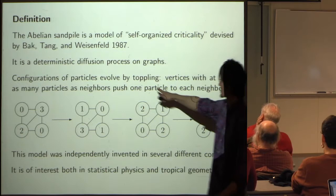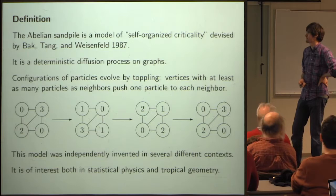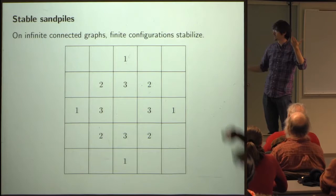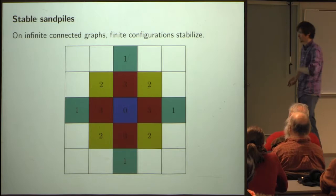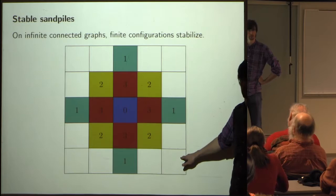The toppling rule: if you have a vertex with at least as many particles as neighbors, it topples. To visualize large sandpiles, a color scheme is used: three is red, two is yellow, one is cyan, zero is blue. White is also zero. Blue is a special zero — it means that at some point during toppling, that site saw a chip.